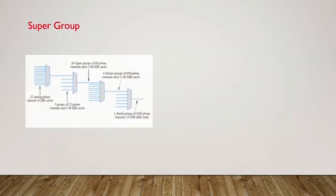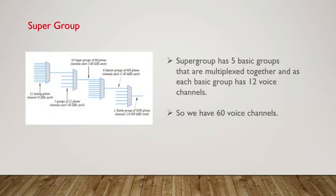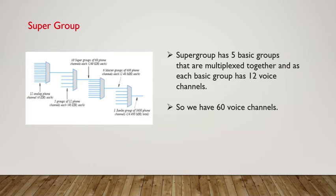The second group is the super group. The super group has five basic groups that are multiplexed together. Since each basic group has 12 voice channels, the super group has a total of 60 voice channels.